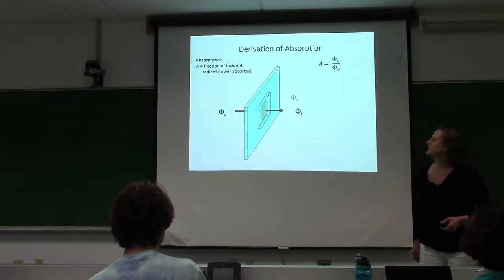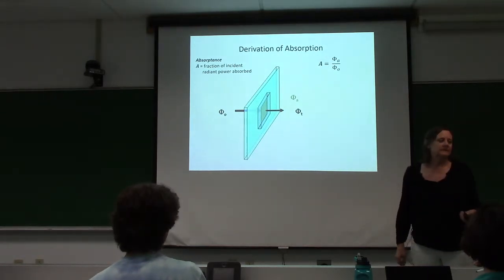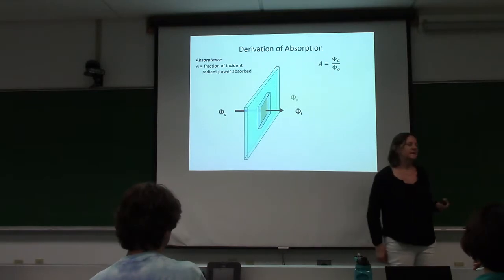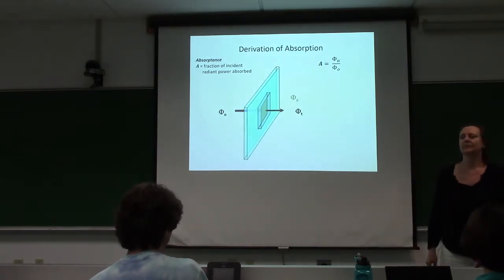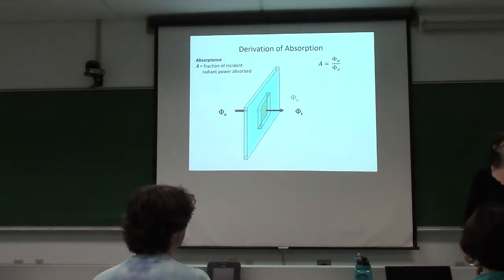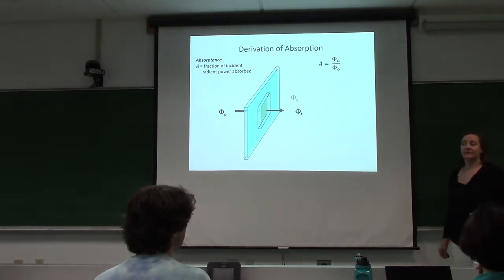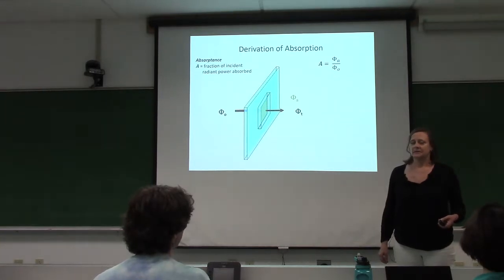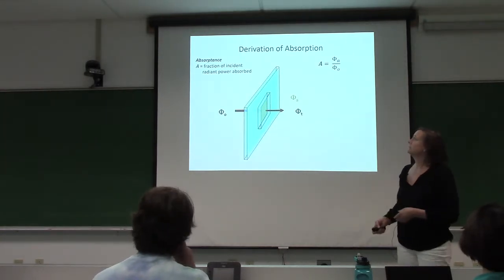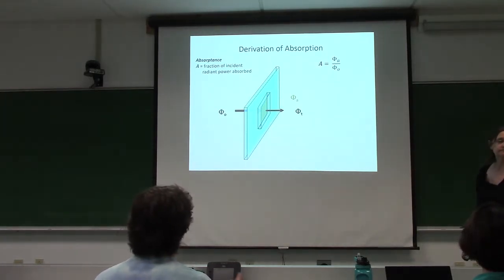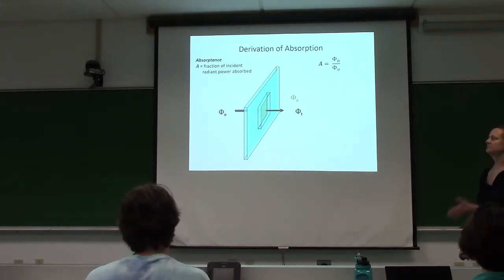For today's absorption discussion, let's think about a material that only absorbs - we're going to ignore scattering. We can define the fraction of the total incident power that's absorbed as the absorptance. One of the problems is that there are a lot of terms people throw around: absorptance, absorb-tance, absorbence, absorption, absorption factor, absorption coefficient, optical density. Absorptance is just the fraction - its range is zero to one.